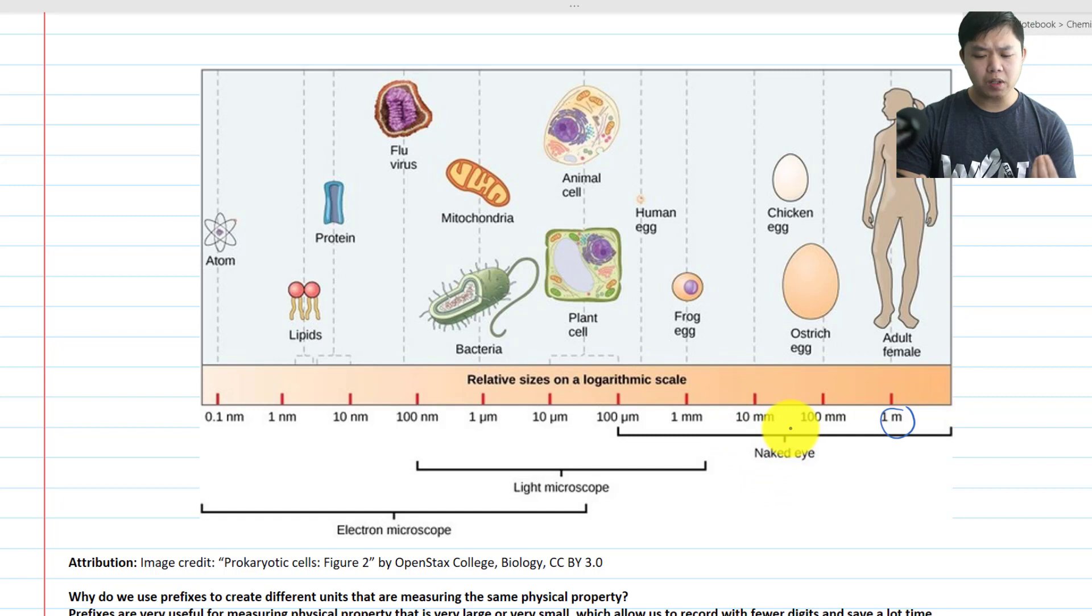But what happens when we get to something very small, like cells? We can't see our cells with our naked eye, it's the same thing with bacteria, it's a virus. So to say this measure in millimeters is a lot too small.